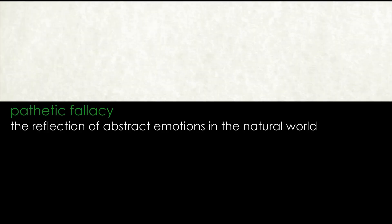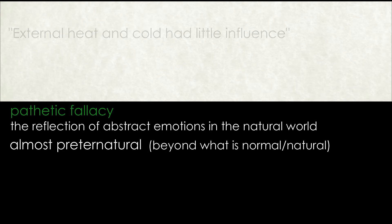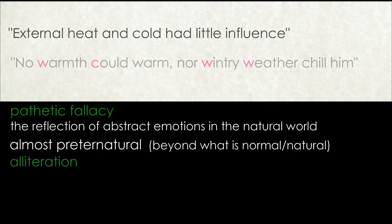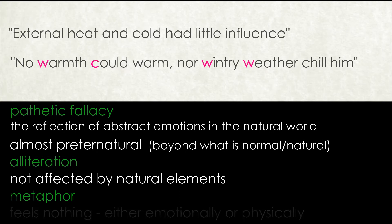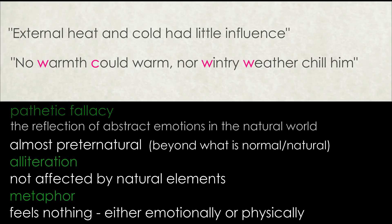At the beginning of the extract, Dickens uses pathetic fallacy to communicate Scrooge's personality. He suggests that Scrooge seems to be almost preternatural in the way that external heat and cold had little influence on him. The alliteration in the image 'no warmth could warm, nor wintry weather chill him' emphasizes the way in which he does not seem to be affected by the natural elements around him — he doesn't react to them in the same way that a normal human being would. This serves as a metaphor to convey the way in which external forces have little impact upon him, communicating how Scrooge has become so hardened that not only does he feel very little emotionally, it has become so much a part of who he is that he does not feel anything physically either.